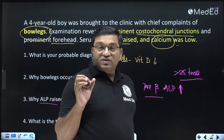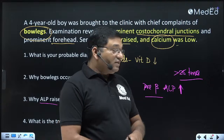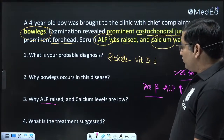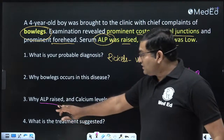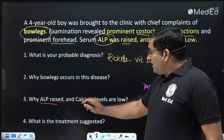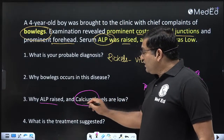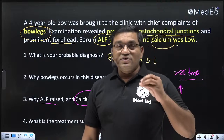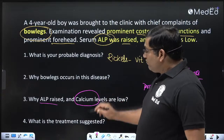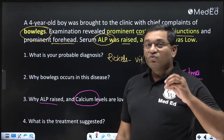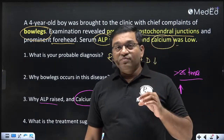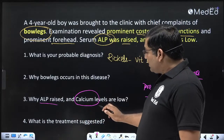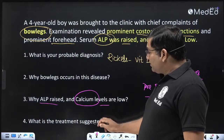Raised ALP is seen in rickets, osteomalacia, Paget's disease of bone, and metastasis of bone. As calcium is regulated by vitamin D and parathormone, vitamin D deficiency leads to decreased calcium levels. That is why ALP is raised and calcium levels are low in this disorder.